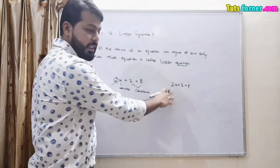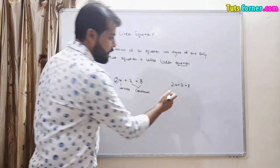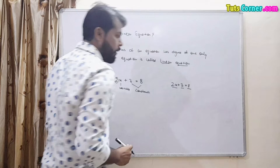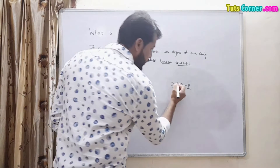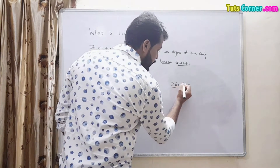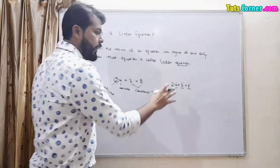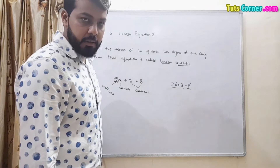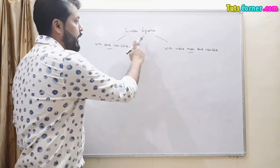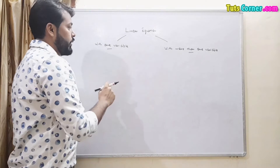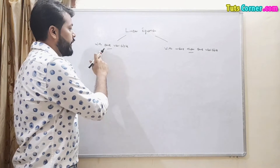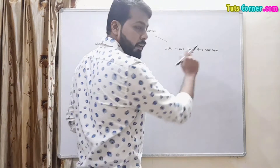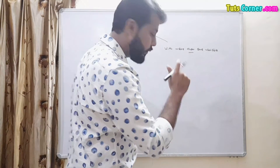In this equation we have three terms, and all three terms have a degree of one, so it is a linear equation. Linear equations have two types: linear equation with one variable, and linear equation with more than one variable.